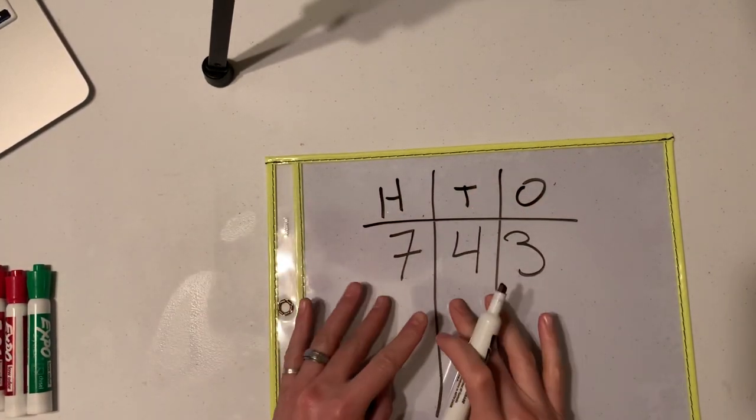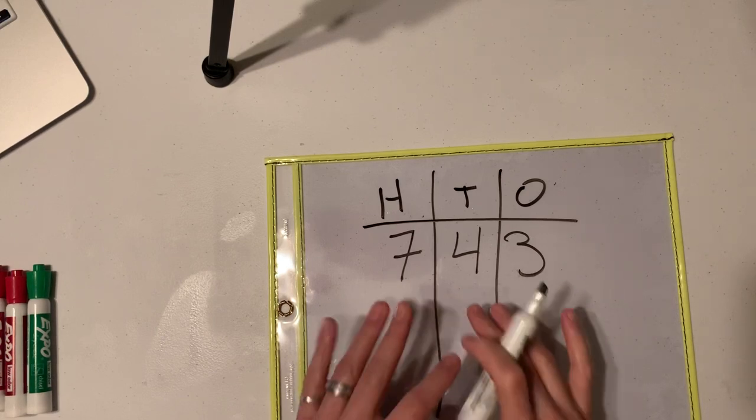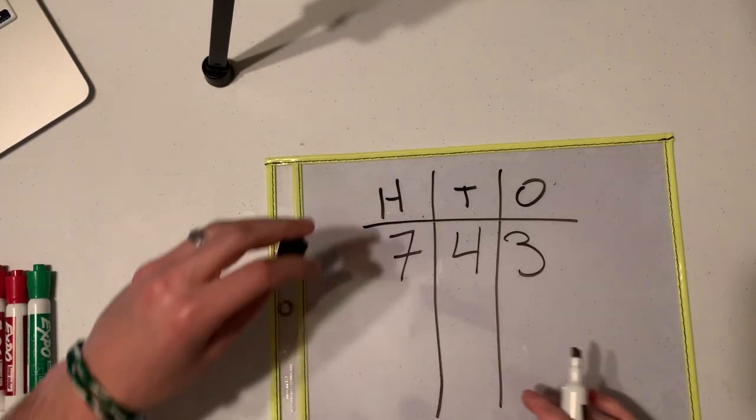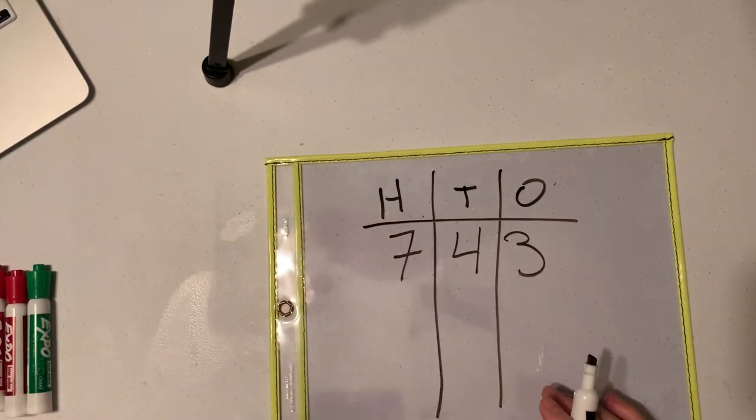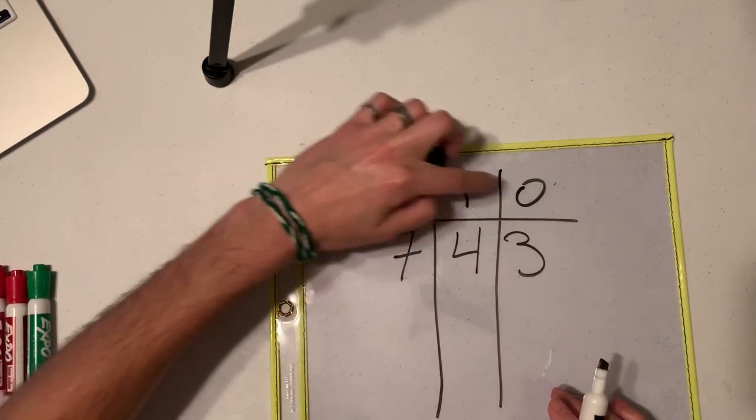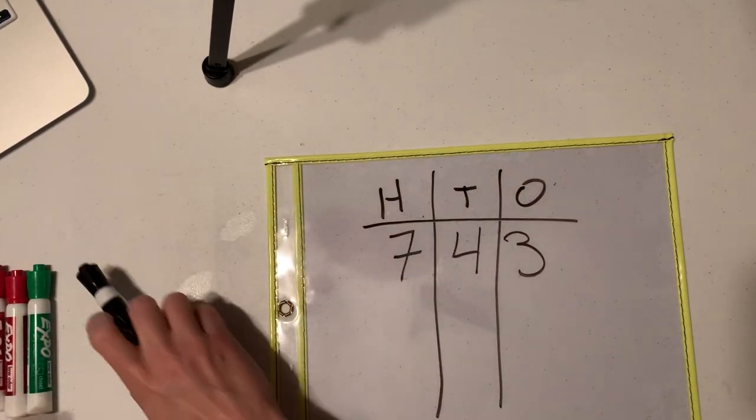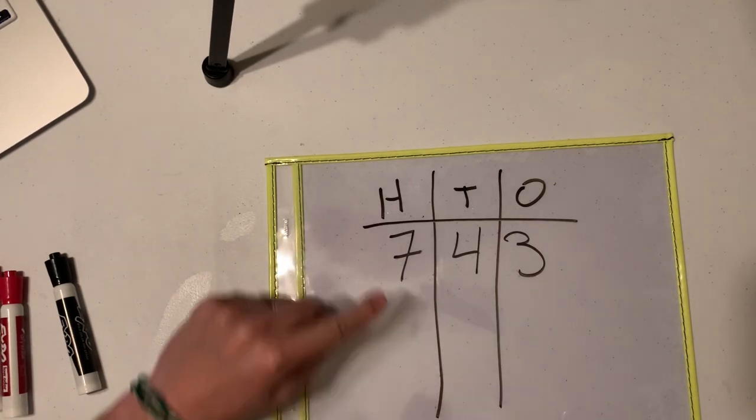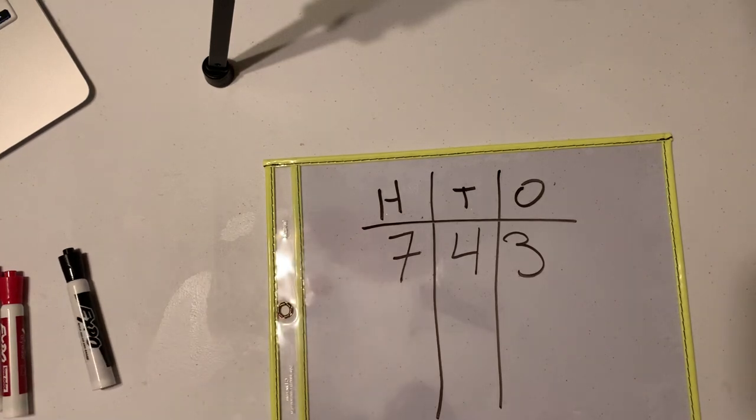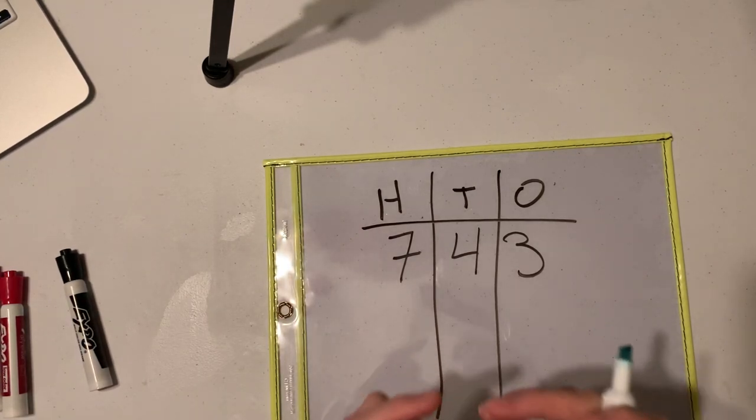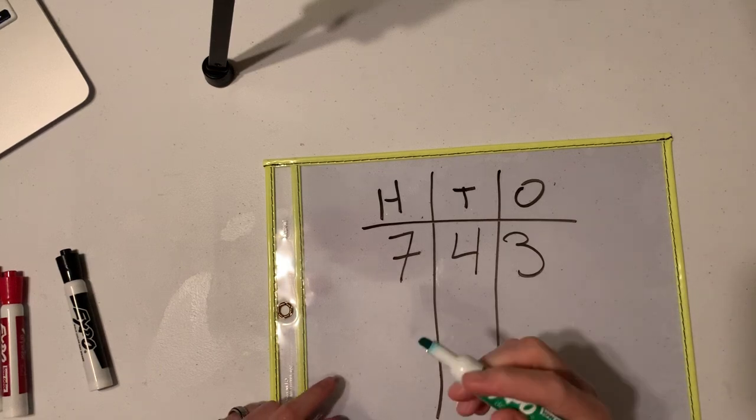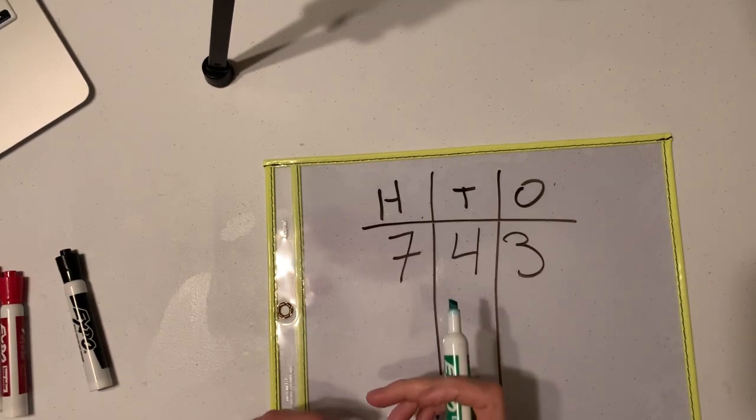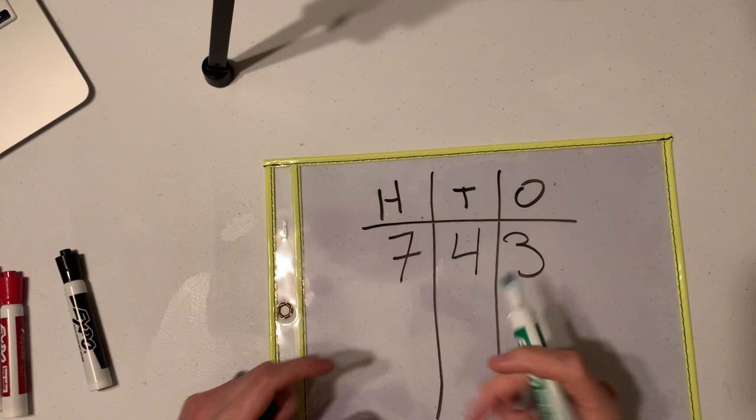And I want you guys to draw your number, the representation with the base 10 blocks of your number. We have hundreds, tens, and ones. Now, seven hundreds. How many hundreds do I have here? Let's see. This is seven. So that means I need to draw the base 10 block for 700. Remember, kids, the hundreds is the big square. Remember that?